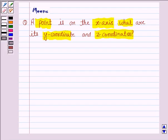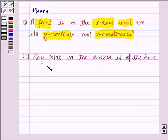We shall solve this problem keeping in mind the following fundamental concepts of three-dimensional geometry. The first one is: any point on the x-axis is of the form (x, 0, 0). That is, the y-coordinate and the z-coordinate are 0, and x is the distance of the point from the origin on the x-axis.